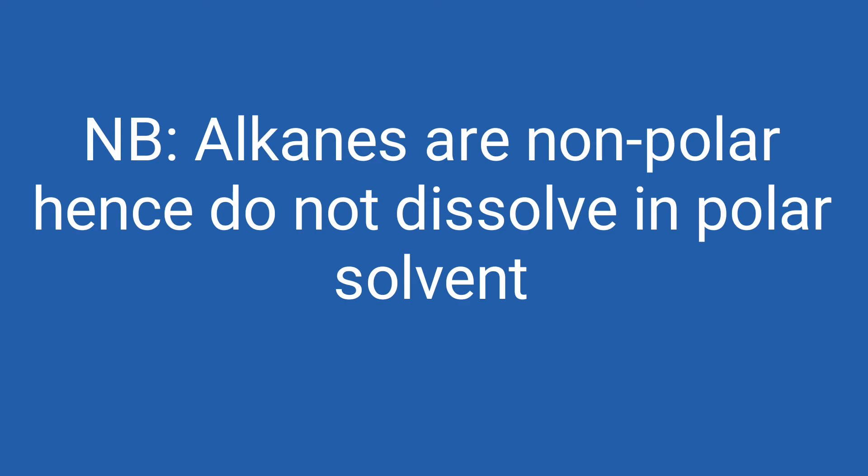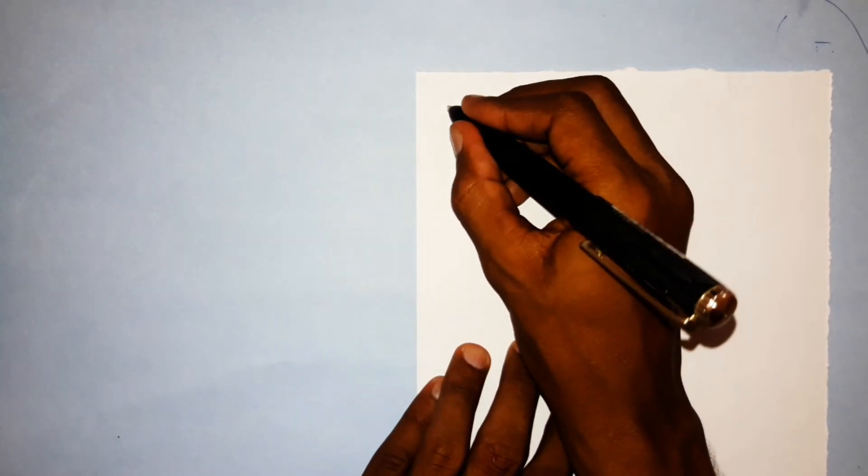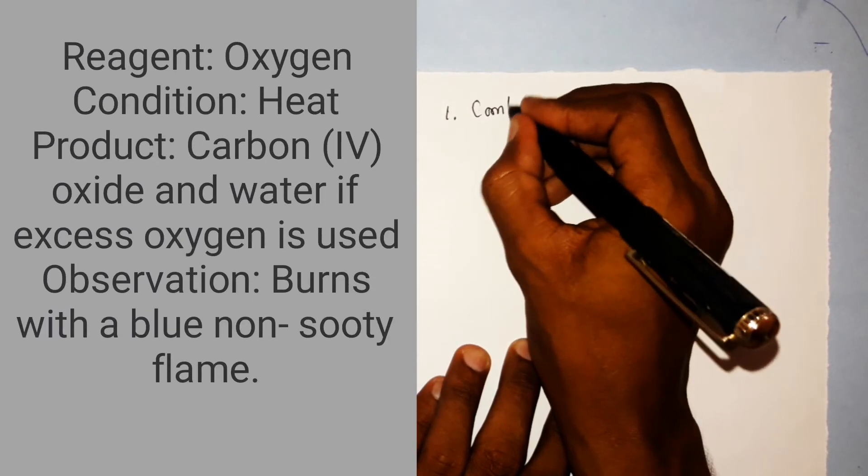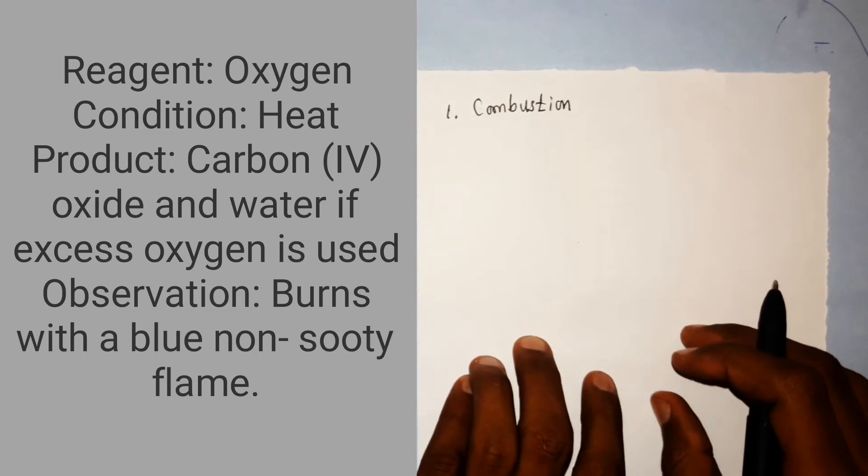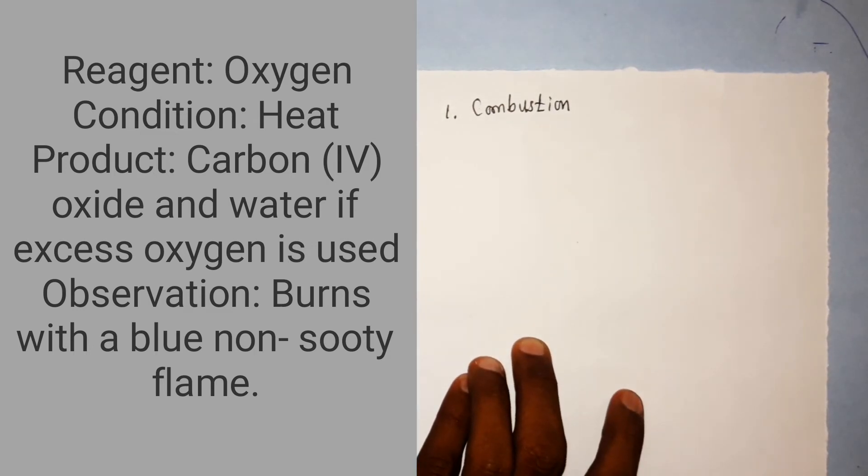Next, the chemical properties. Under chemical properties, we usually talk about reactivity. We have two chemical properties. One is combustion. Combustion is burning. Under combustion, what you need to know is the reagent used. The reagent used is oxygen. Condition required is heat. The product depends on whether excess or limited oxygen is used.